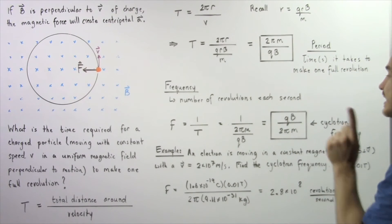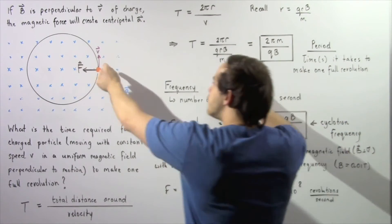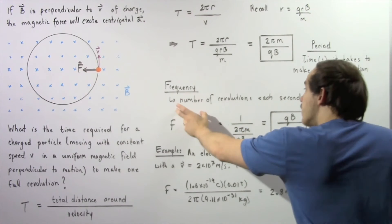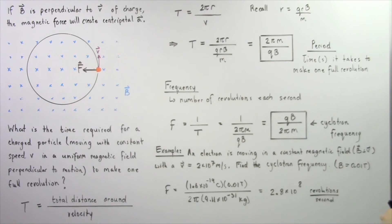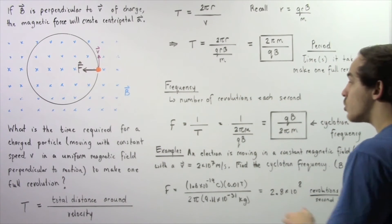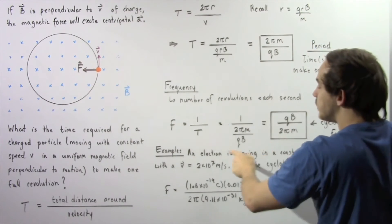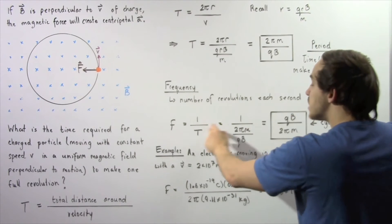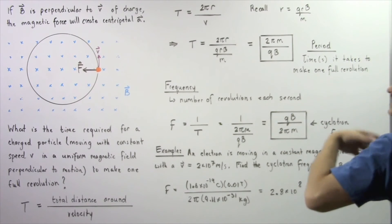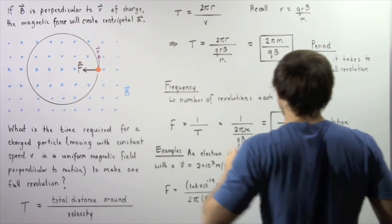This gives us the period — the time in seconds it takes our electric charge to make one full circular revolution. The frequency is defined as the number of revolutions our electric charge makes every single second. To find the frequency, we take 1 and divide it by our period. Since T equals 2πm/(qB), plugging that into the denominator gives us the frequency — also known as the cyclotron frequency — as qB divided by 2πm, where q is the quantity of charge, B is our uniform magnetic field, and m is the mass of our electric charge.